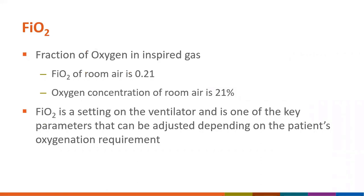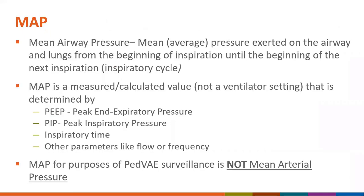FiO2 refers to fraction of oxygen in inspired gas. It is a setting on the ventilator and is one of the key parameters that can be adjusted depending on the patient's oxygenation requirement. MAP, or mean airway pressure, is the mean pressure exerted on the airway and lungs from the beginning of inspiration until the beginning of the next inspiration. Unlike FiO2, MAP is a measured or calculated value, calculated using PEEP, PIP, inspiratory time, and other parameters such as flow and frequency. For PVAE purposes, MAP refers to mean airway pressure, not mean arterial pressure.